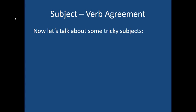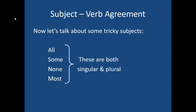Today we're going to take a look at some other tricky subjects with subject-verb agreement. We're going to take these words: all, some, none, and most. And unlike the words we learned yesterday — words like each and every, which are always singular — these ones are tricky because they are both singular and plural. That's what makes them a little different and more challenging, because we have to recognize these four words have different rules to them.